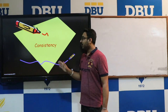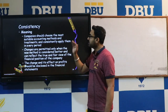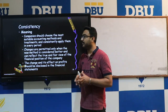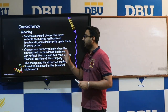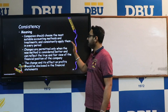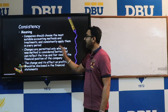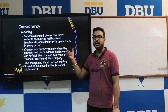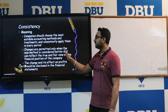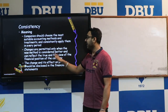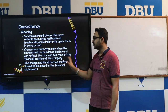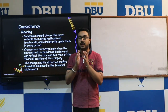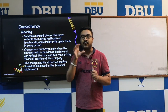The next concept is Consistency. Consistency means a company should choose the most stable accounting method and treatment and consistently apply it in every period. Changes are permitted only when the new method is considered better and can reflect the true and fair view of the financial position of the company.